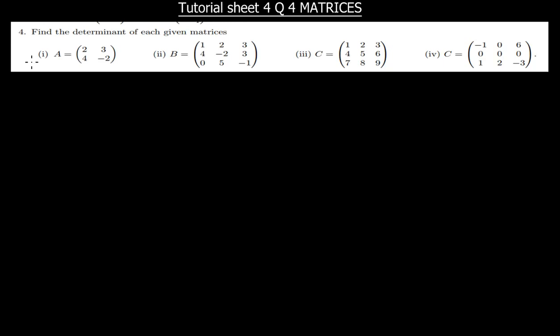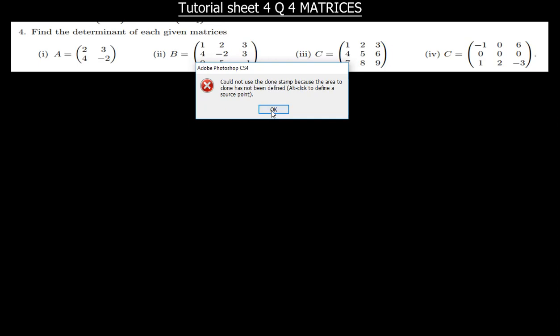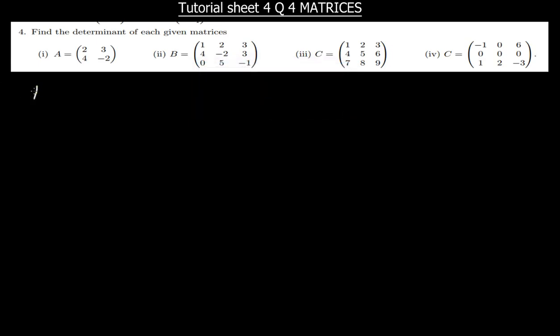So a minor is just any 2x2 matrix. So let's take for instance if X is your matrix with the elements a, b, c, and d. So this one can be called a minor. When finding the determinant of X, you multiply diagonally — a times d — and then you subtract c times b. So this is how you find your determinant.